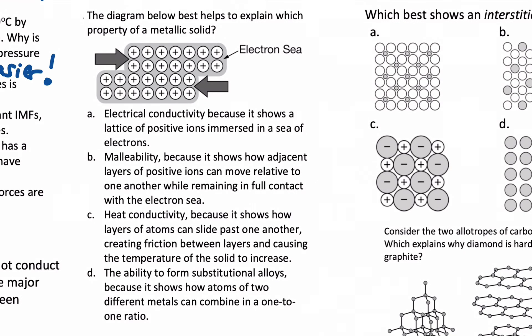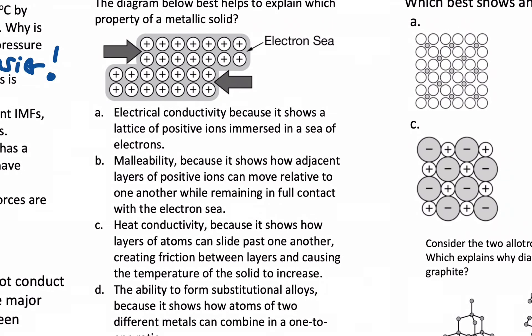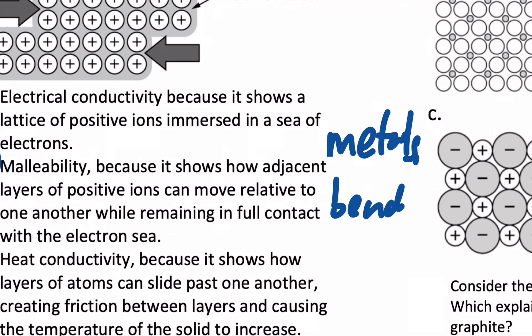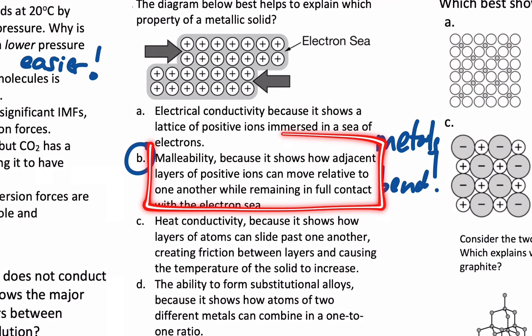Next, the diagram below best helps to explain which property of a metallic solid. So here's that sea of electrons, which we already said in the beginning is why it's malleable, it can bend, and also why it conducts. So let's see. Electrical conductivity because it shows a lattice of positive ions immersed in a sea of electrons. Well, that's true, but it looks like there's something special in this drawing that shows how they're trying to shear a layer of the metal differently from a different layer of the metal. And that really has to do with malleability, the fact that it can bend. Metals bend. And this explanation right here is a great way of trying to learn the kind of wording that they would want students to use on a free response question. So this shows the malleability because it shows how adjacent layers of ions, positive ions, can move and still remain in contact with the electron sea. That's why metals bend and why they're not brittle.